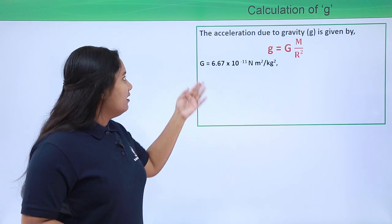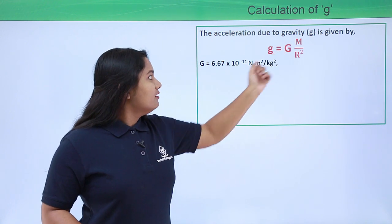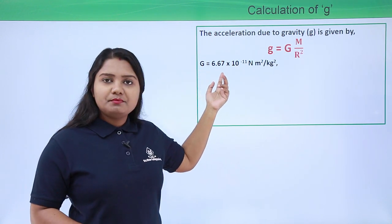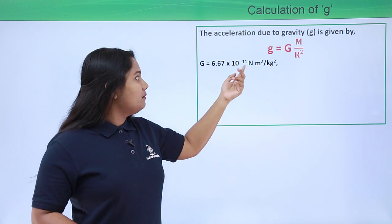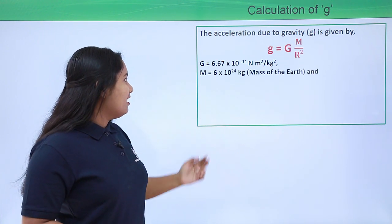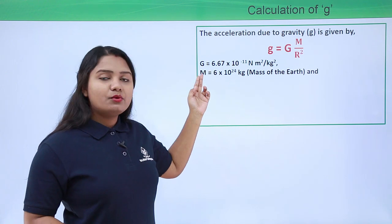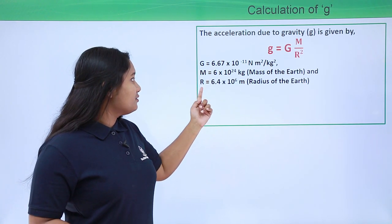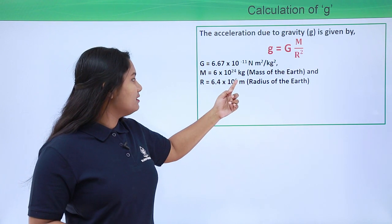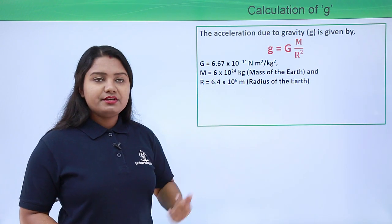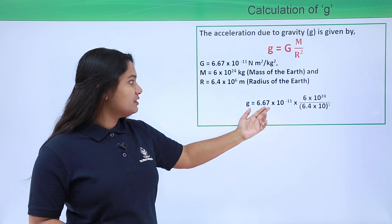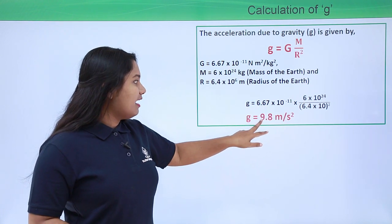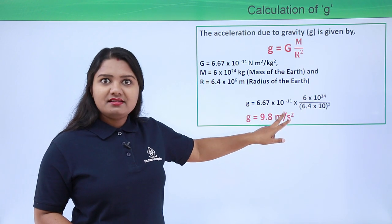Substituting the known values — G equals 6.67 times 10 to the power minus 11 N·m²/kg², mass of the Earth equals 6 times 10 to the power 24 kg, and radius of the Earth equals 6.40 times 10 to the power 6 meters — we get g equals 9.8 meters per second squared.